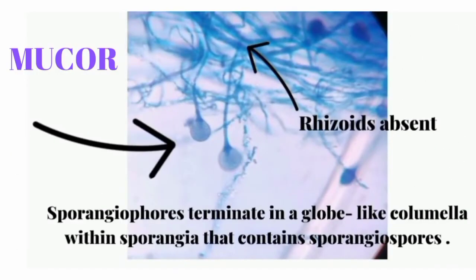Next one is Mucor species. Both Mucor and Rhizopus have aseptate hyphae, meaning septations are not present. Above is a globe-like structure which is the sporangium, and within the sporangium, sporangiospores are present. One more difference is that in Mucor, the nodal rhizoids which are present in Rhizopus are absent.